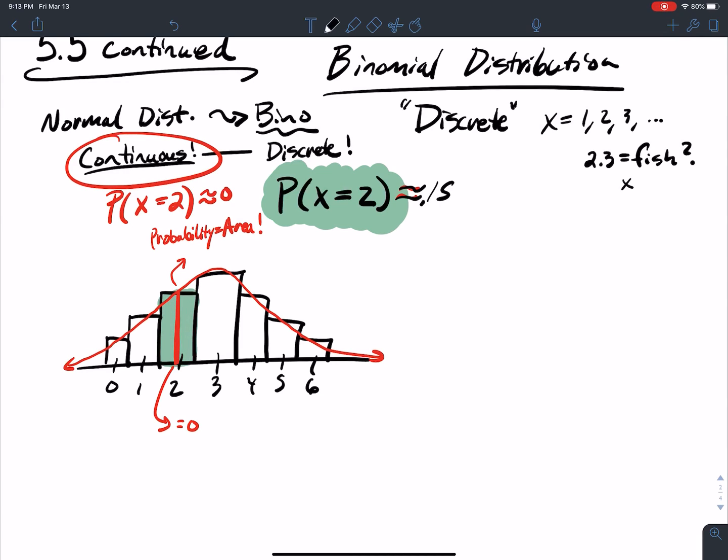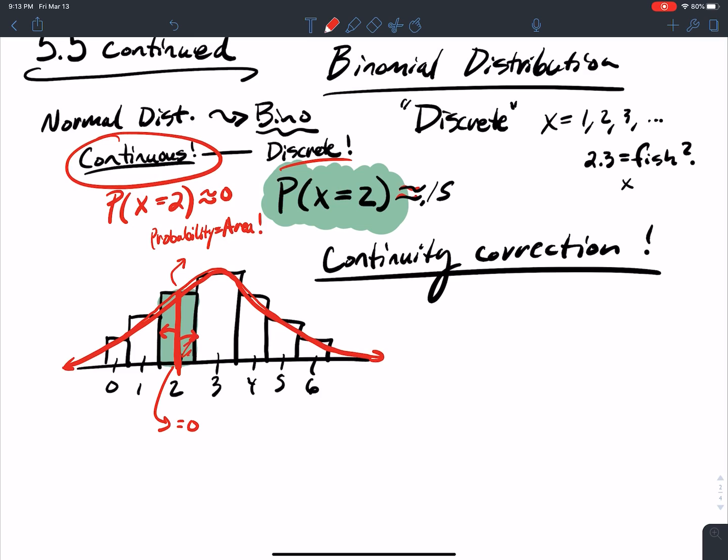So how do we account for this? This is what's known as the continuity correction. When I'm looking at the continuous and I'm going to use that to approximate my discrete binomial, what I do instead of looking at a single point x equal to 2, I go out a little bit to the right, and I go out a little bit to the left. How far do I go out each way? I go out a half.